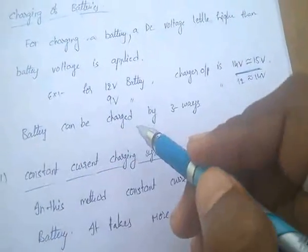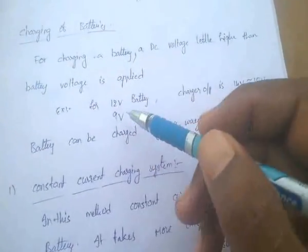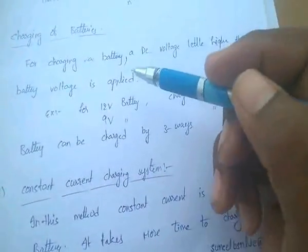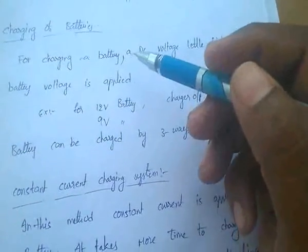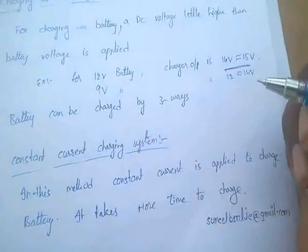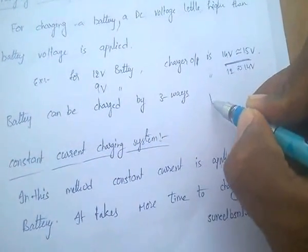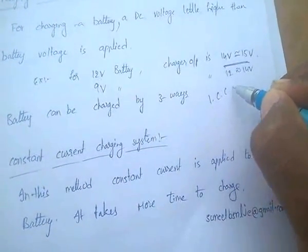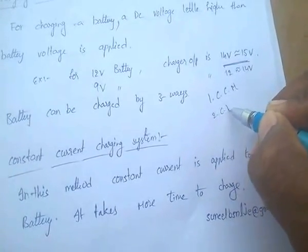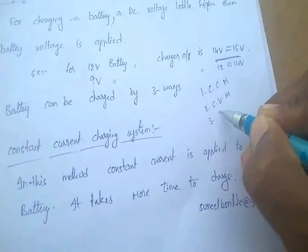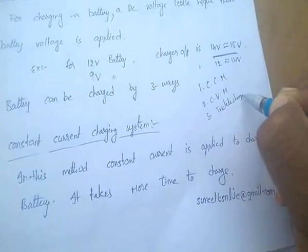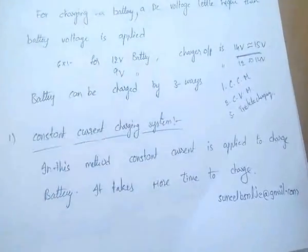Batteries can be charged by three ways. The first method is the constant current charging method, the second is the constant voltage charging method, and the third is the trickle charging method.